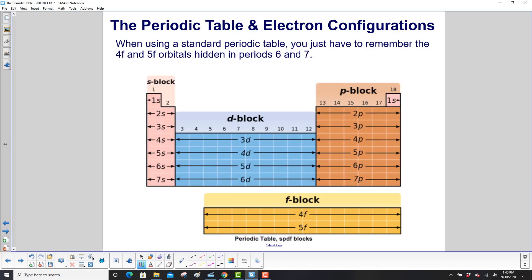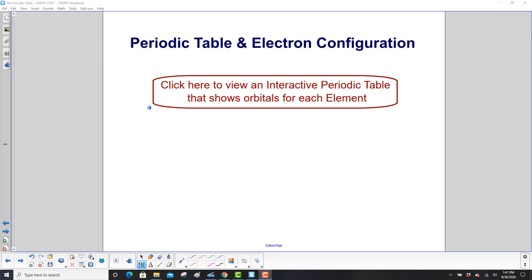When using a standard periodic table, you just have to remember the 4F and 5F orbitals that are hidden in period 6 and 7. So here's your standard periodic table here. But within 6, you have the 4F and within 7, you have the 5F. So you can click here to view an interactive periodic table that shows the orbitals for each element.